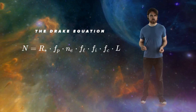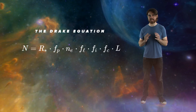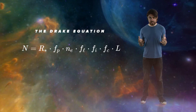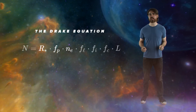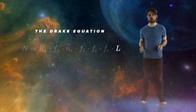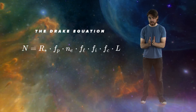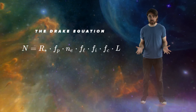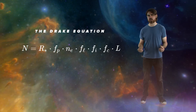The famous Drake equation tries to estimate the number of technological civilizations currently existing in our galaxy. It gives that number as a combination of astrophysical, biological, and sociological factors, each of which narrows the range of stars in our galaxy that may have produced a surviving civilization.